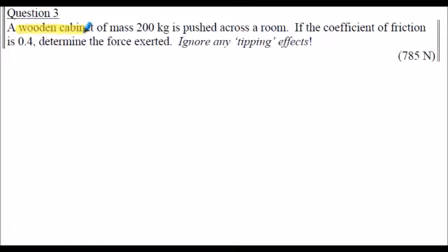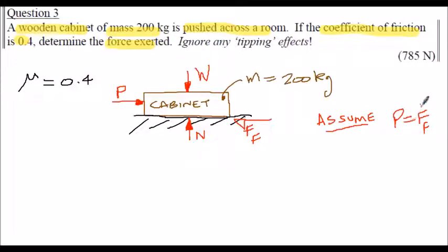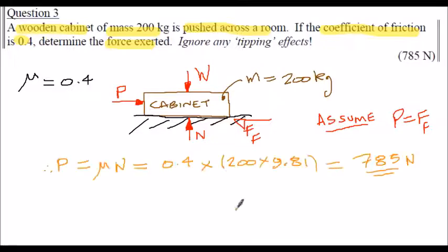Question 3: a wooden cabinet of mass 200 kilograms is pushed across the room. The coefficient of friction is 0.4. Determine the force exerted to push it across the room, ignoring tipping effects. Work out the weight force first, then find the normal force - which is equal and opposite to the weight force by Newton's third law. Then apply FF = mu × N to find the force required at the limiting condition.